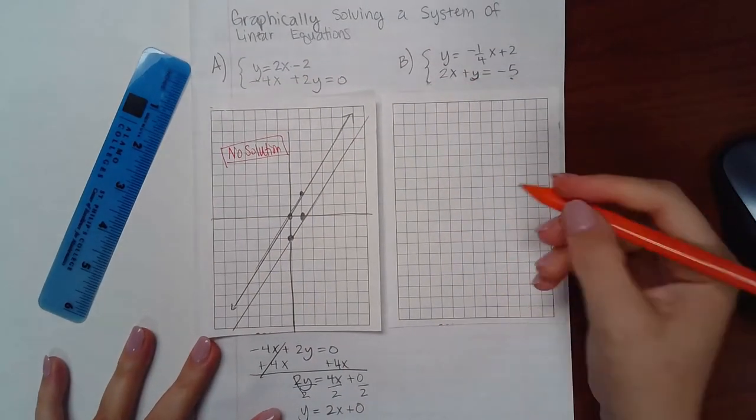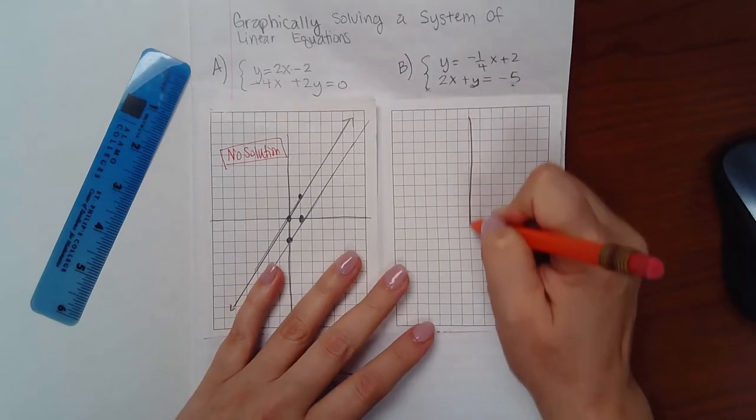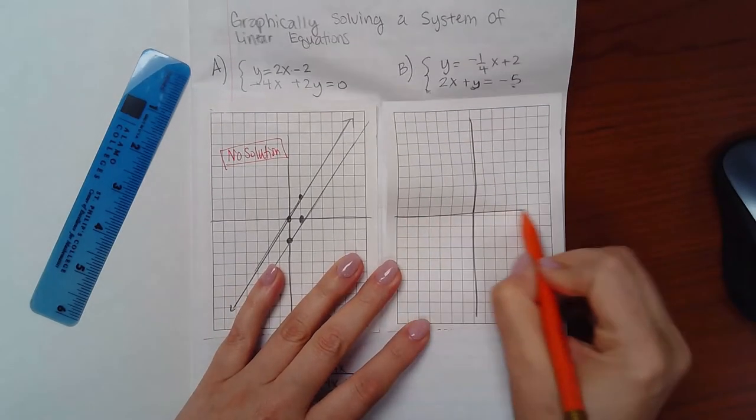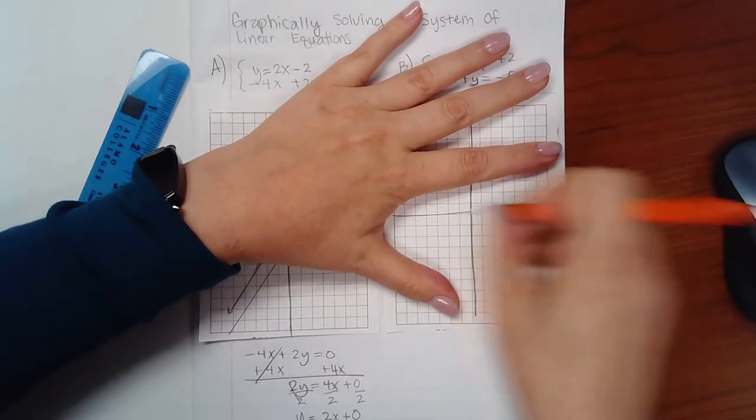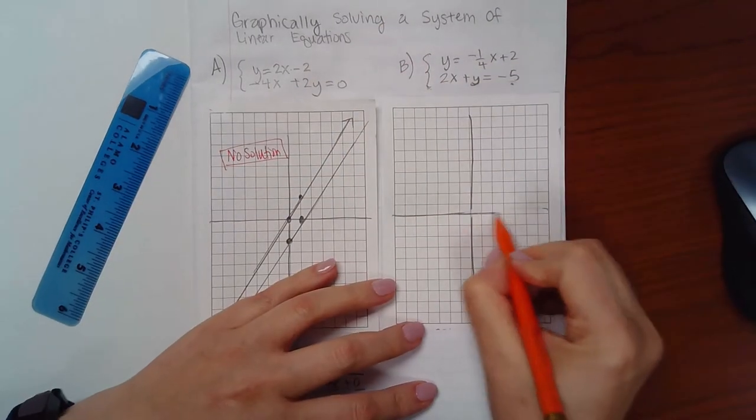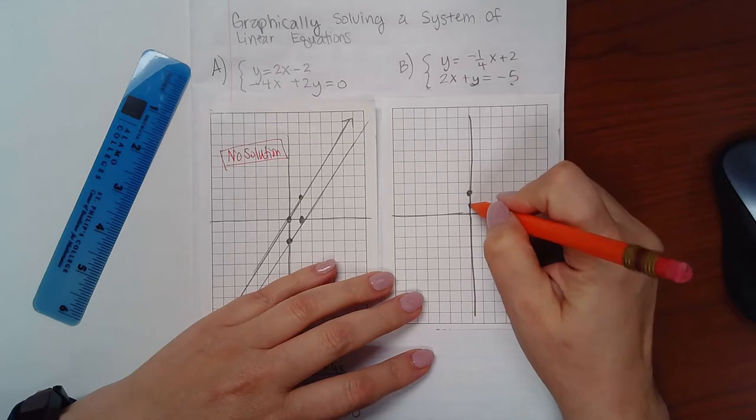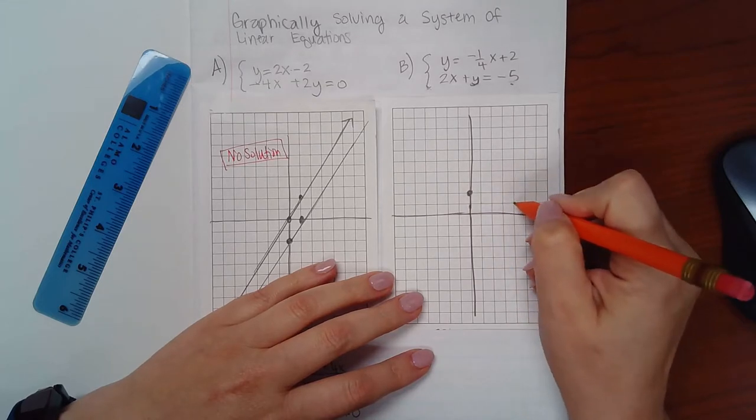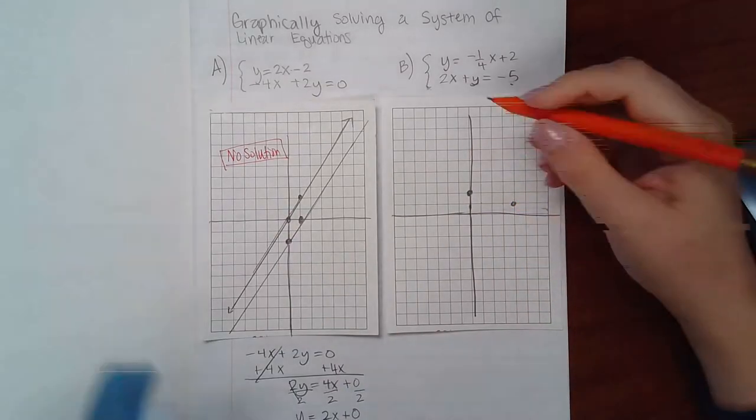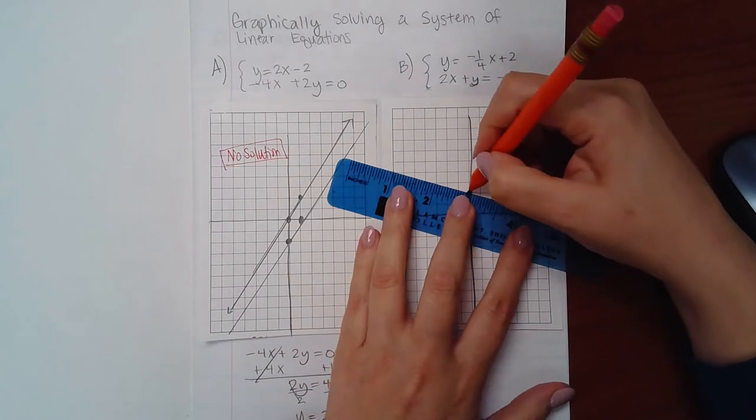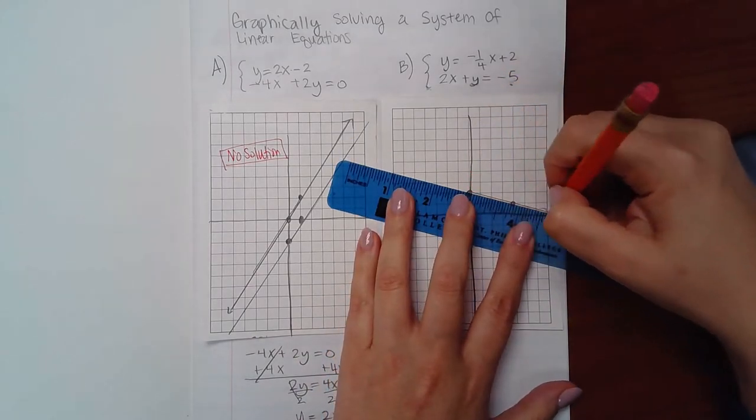In part B, we'll do the same thing. So here, let's graph that equation. We get 2 as the y-intercept, positive 2. And then we go down 1 and over 4 for the slope. So the top equation will yield this graph.